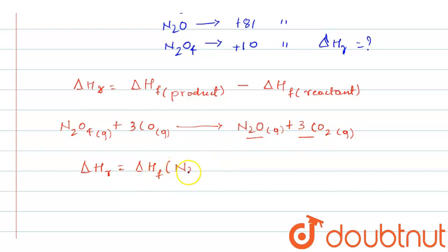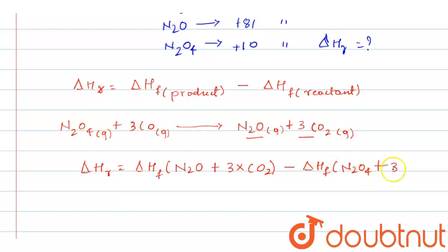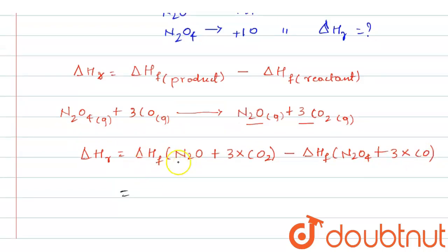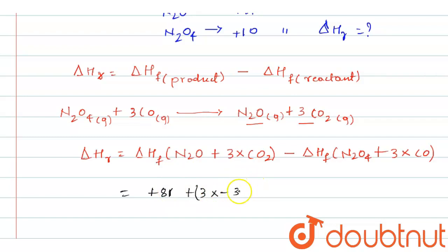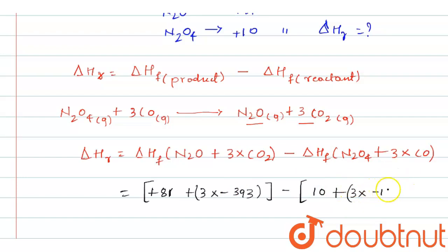So delta H_r equals enthalpy of formation of N2O plus enthalpy of formation of CO2, minus enthalpy of formation of N2O4 plus enthalpy of formation of CO. Substituting values: for N2O it is plus 81 kJ/mol; for CO2 it is minus 393 kJ/mol; for N2O4 it is plus 10 kJ/mol; and for CO it is minus 110 kJ/mol.